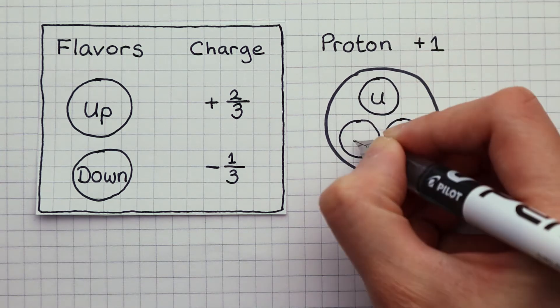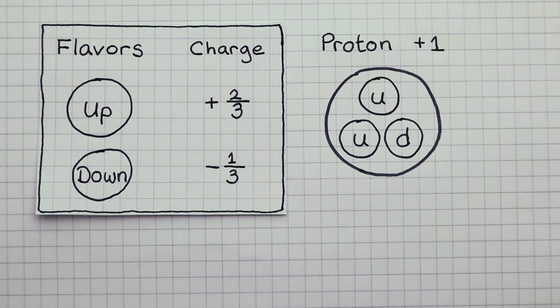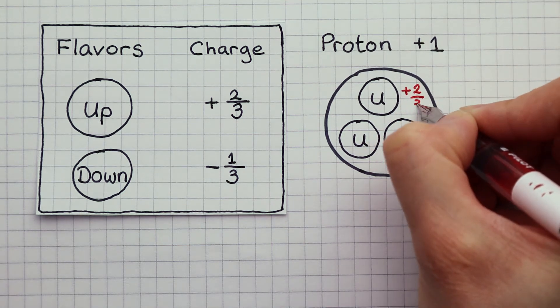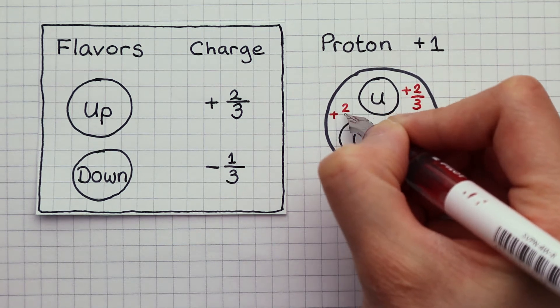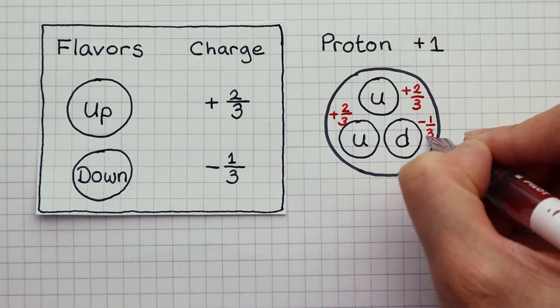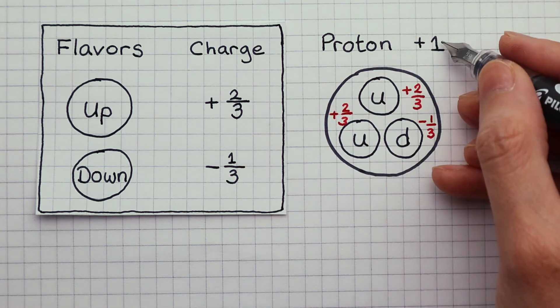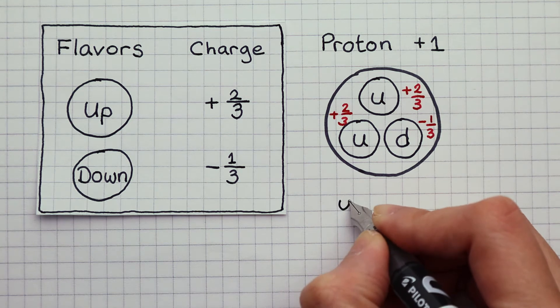We can make a proton using two up quarks and one down quark because that gives a charge of plus two thirds, plus two thirds, and minus a third. So the total is plus one. The quark composition we say is up, up, down.